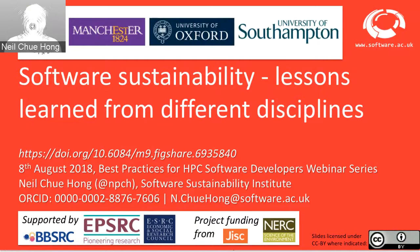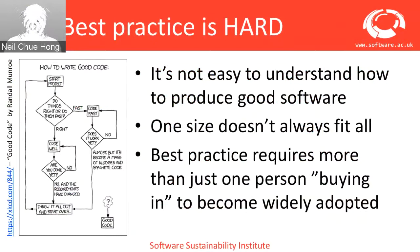We are a cross-university collaboration of the universities of Edinburgh, Manchester, Oxford and Southampton, which has been working since 2010 to understand how researchers use and develop software and how to improve the practice of using and developing scientific software and research software. This talk is going to be about different lessons we've learned from across different disciplines. One of the things quite unusual about us as an institute is that we work across many different sectors — engineering, physical sciences, social sciences, biological sciences, arts and humanities, environmental sciences, and basically across the entire scientific and research domains.